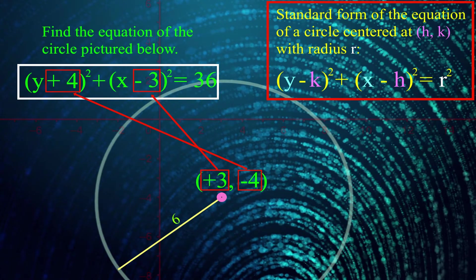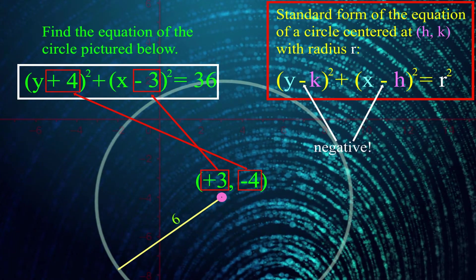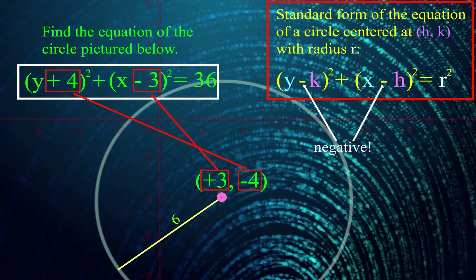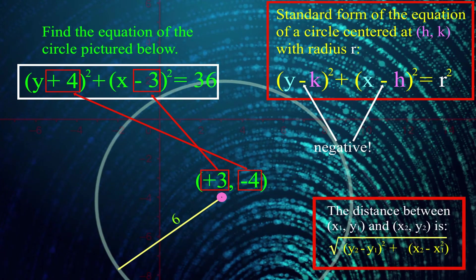It's because we have those negative signs in the general form. Which, if you really want to trace things back, came from the negative signs in our distance equation.